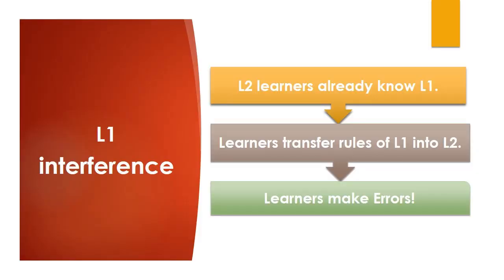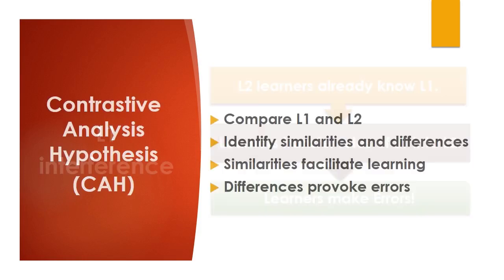However, learning a second language is not an easy task according to the behaviorists as it faces many challenges. The biggest of these challenges is the first language. Second language learners already know a first language and they tend to transfer the rules and structures of their first language into the second language. This results in errors in the second language. So, behaviorists claimed that learners should switch off their first language when they are learning the second language.